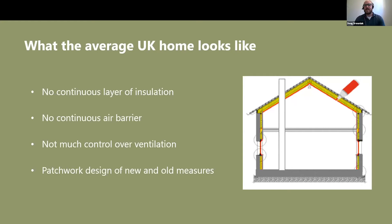So you haven't got a continuous layer of insulation - this yellow line is not continuous. There's no continuous or designed air barrier in most homes. There's not much control over ventilation, so ventilation increases and decreases depending on things like the wind, the weather, and the type of construction. You've typically got a patchwork design of new and old measures that haven't really been holistically thought out, just added at various stages of the existence of that building. That is typically the starting point.